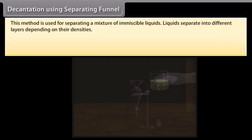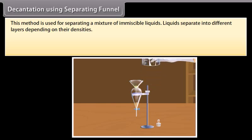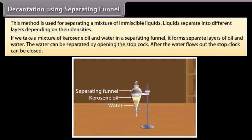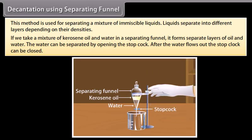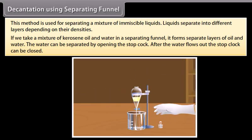Decantation using a separating funnel. This method is used for separating a mixture of immiscible liquids. Liquids separate into different layers depending on their densities. If we take a mixture of kerosene oil and water in a separating funnel, it forms separate layers of oil and water. The water can be separated by opening the stopcock, and after the water flows out, the stopcock can be closed.